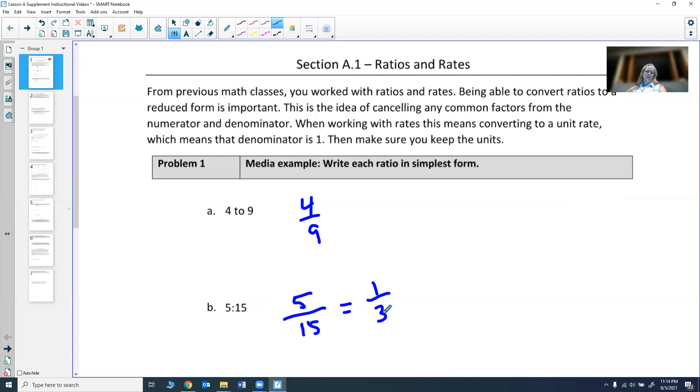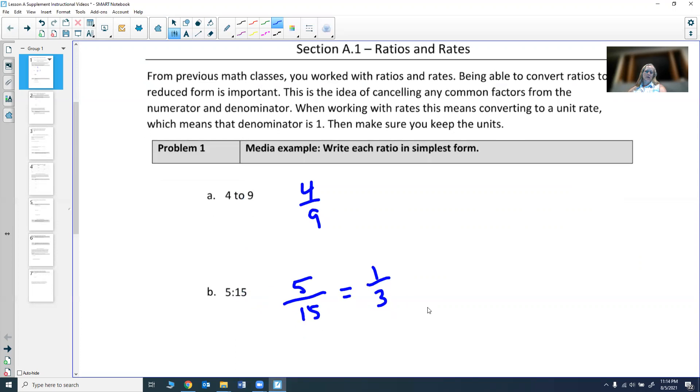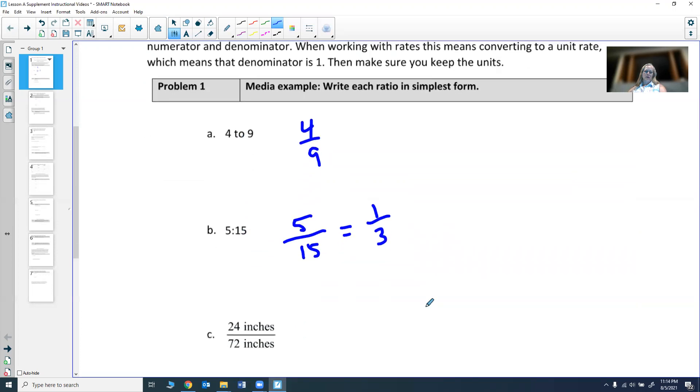5 goes into both numerator and denominator. 5 goes into 5 once, 5 goes into 15 three times. So we get 1 third.